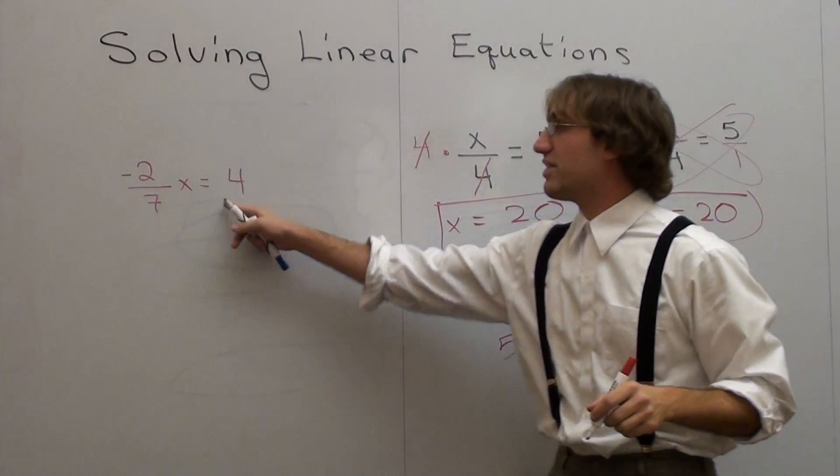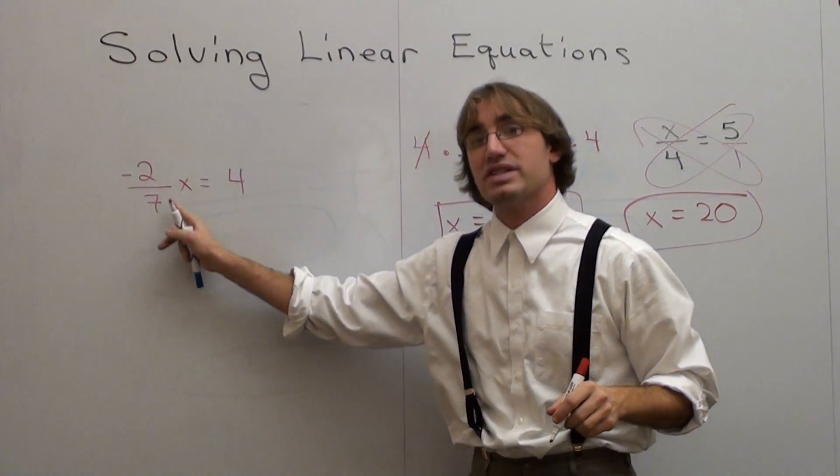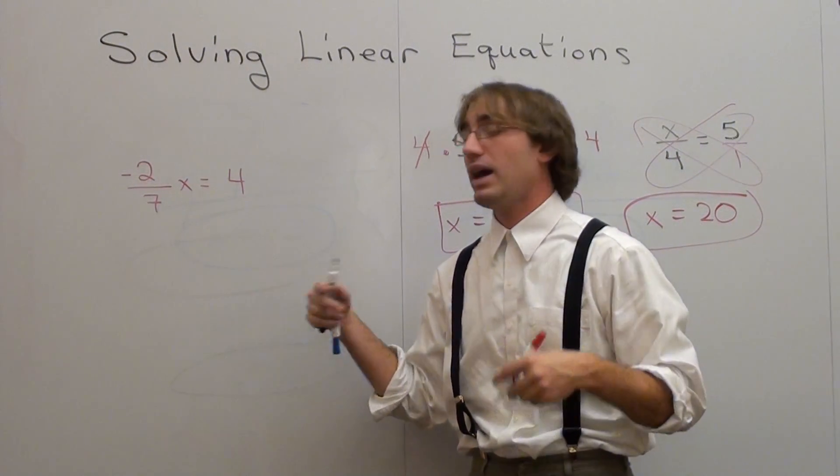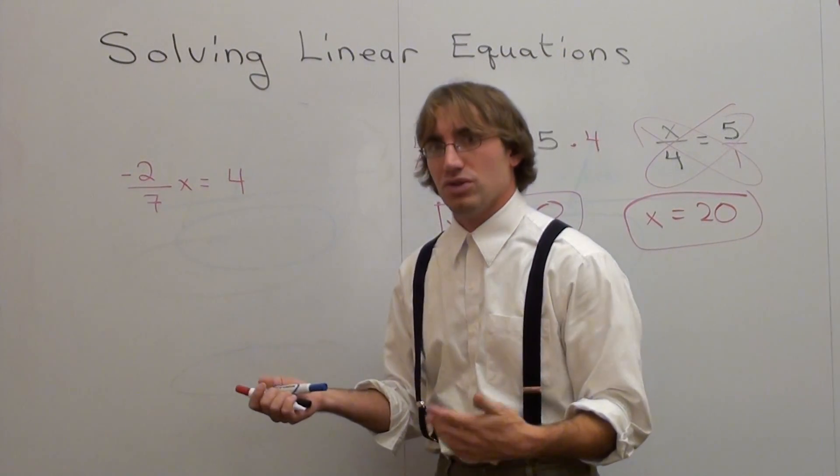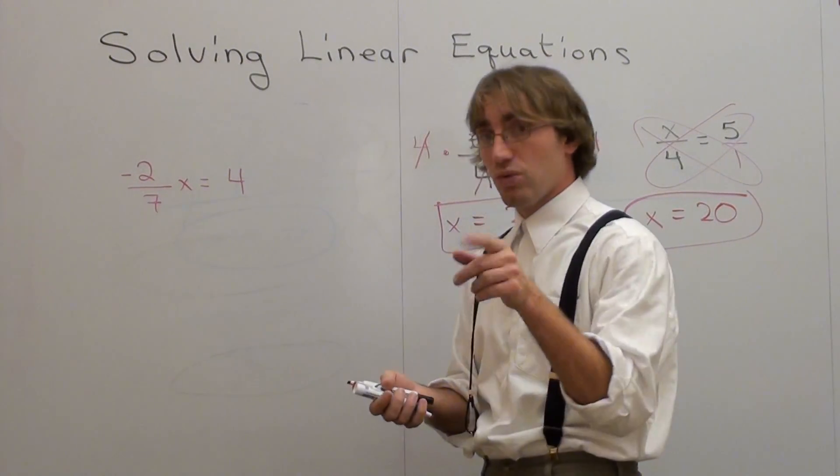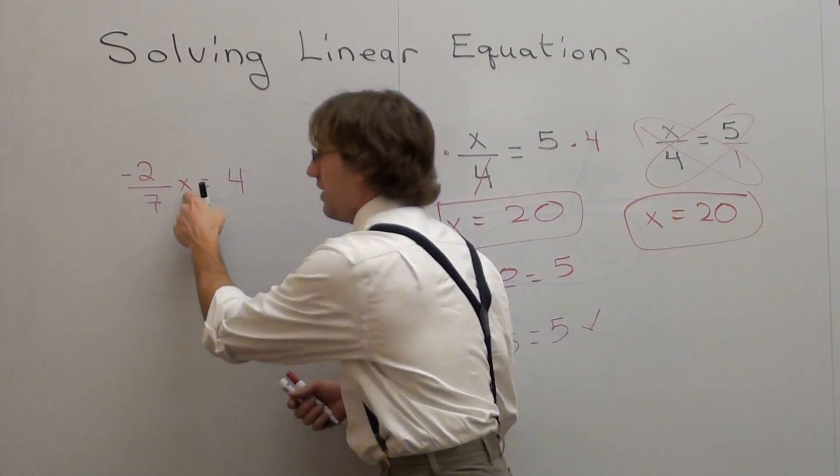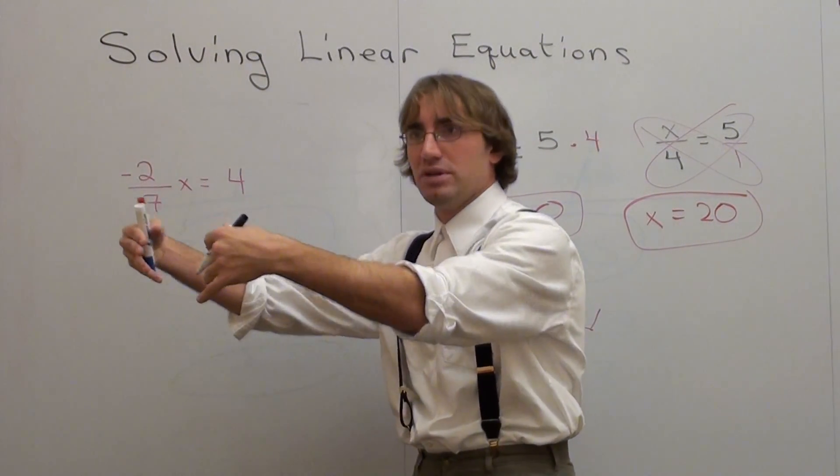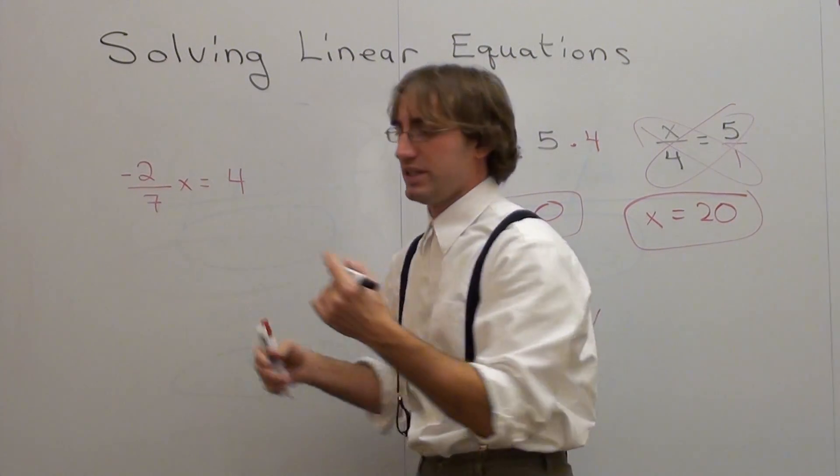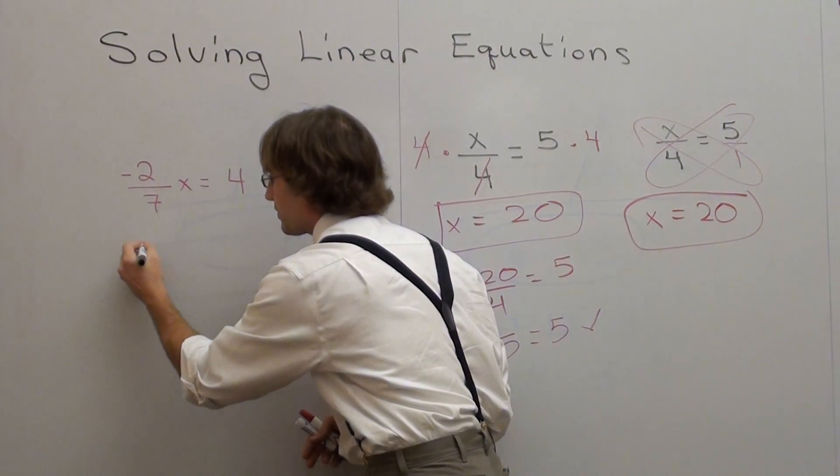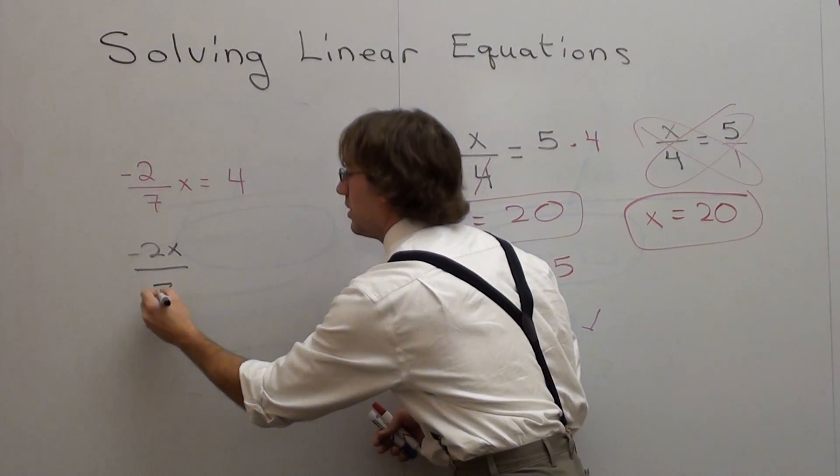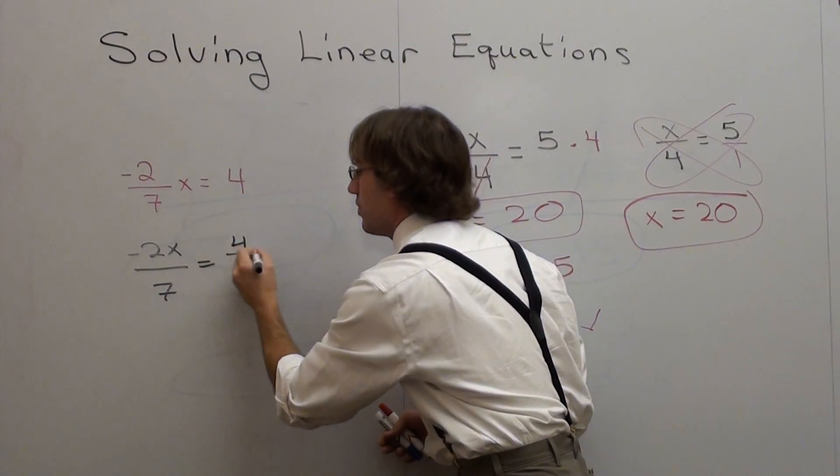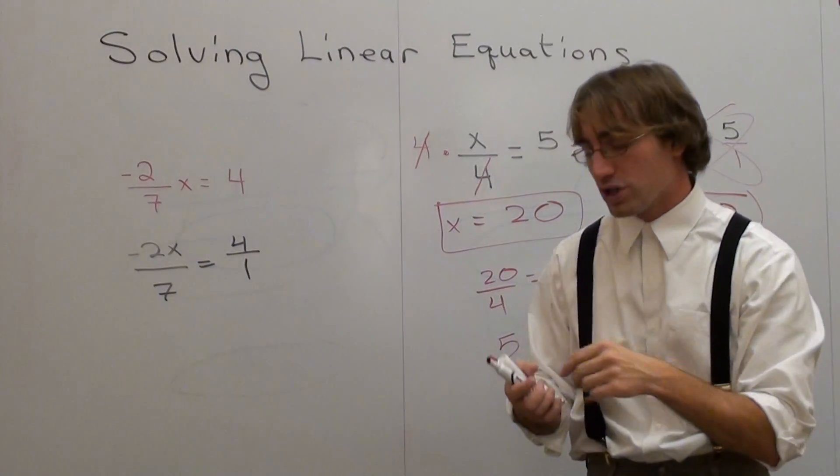Negative 2 over 7x, or negative 2 sevenths, times x equals 4. I want to figure out what my x value is. Here's how I would just show my students really quickly. But I would rewrite it. First of all, if an x is in the middle, it just means it belongs on the top. If anything's in the middle, it belongs on the top. Negative 2x over 7 equals 4 over 1. Cross multiply.